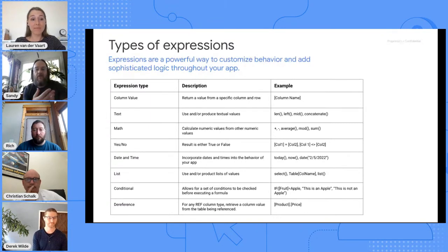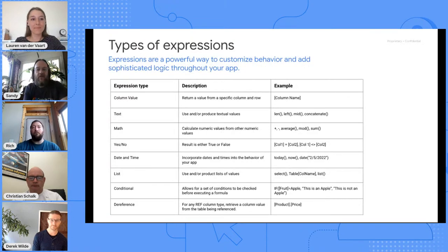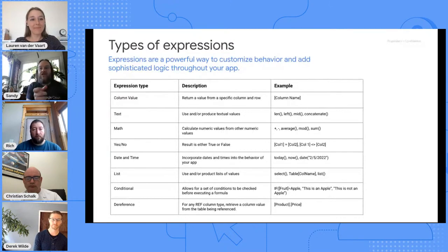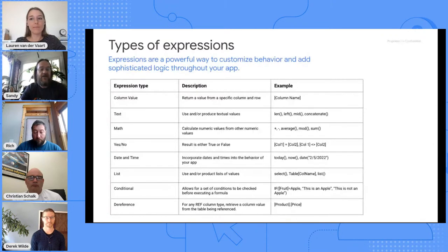Conditional logic — the IF statement — allows you to evaluate something to true or false and take a path accordingly. References and dereferences are for when data sets are connected by an identifier. You can use these to move back and forth between two related data models — whether it's a parent-child relationship. This is powerful for denormalizing your data structure so you can easily get values when building a UX display, and it ultimately simplifies the data model for you.